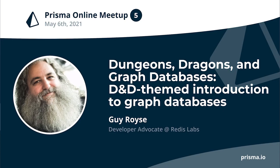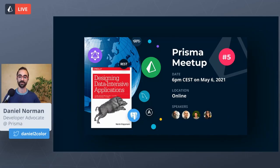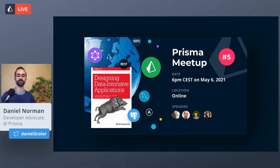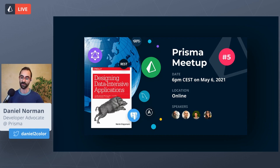I'm really excited to introduce our first speaker for today, and that is Guy Royce. Guy works for Redis Labs as a developer advocate, combining his decades of experience in writing software with a passion for sharing what he has learned. Guy goes out into developer communities and helps others build great software. He lives in Columbus, Ohio with his wife, his three teenage sons, and a large collection of tabletop role-playing games.